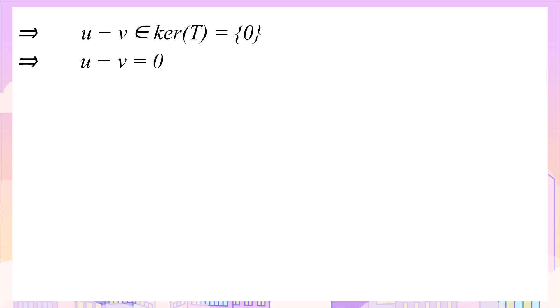This infers that u minus v equals zero, so u is equal to v. Therefore T is an injective map, and thus we arrive at the sought-after conclusion.